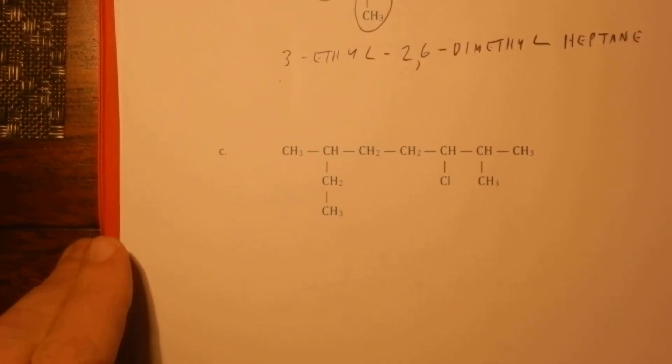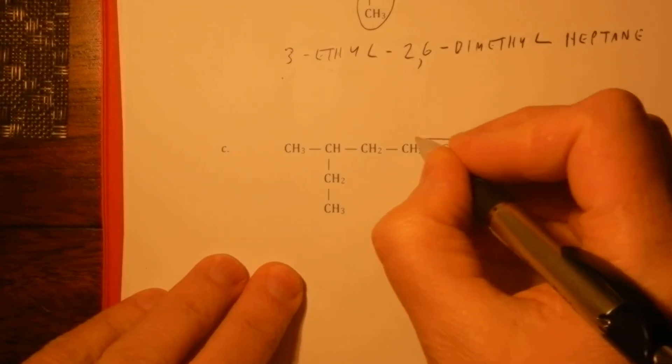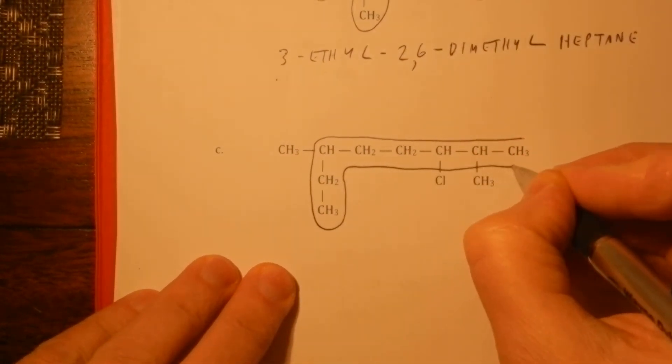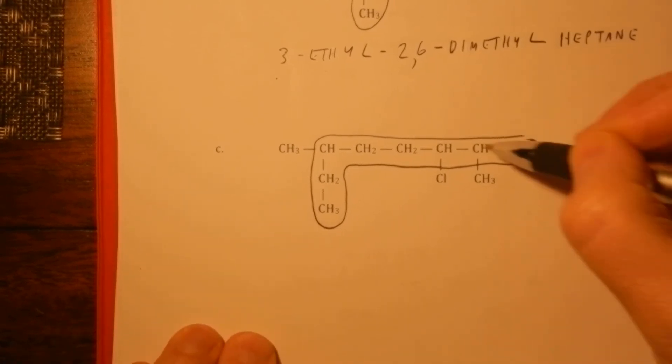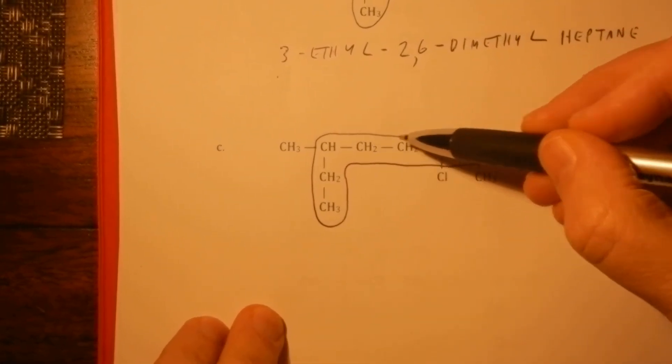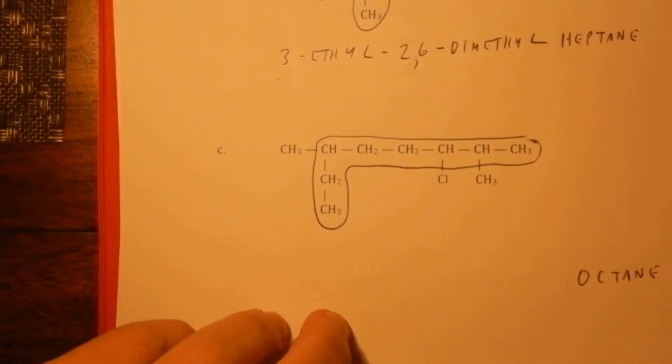And finally, our last example on this page. And that gives us our longest chain of consecutive carbon atoms. Three, four, five, six, seven, eight. So we know it is an octane.